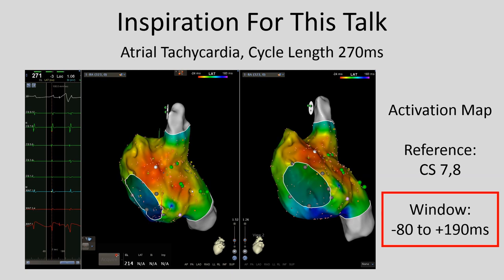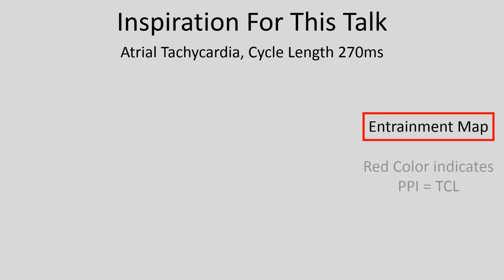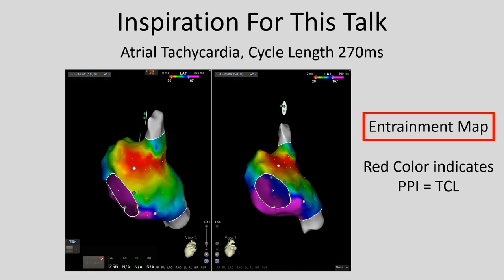At this point, we decided to abandon activation mapping because it was giving us information that didn't seem helpful. We went to entrainment mapping. When we created an entrainment map looking for spots in or immediately adjacent to the tachycardia circuit, we found a clear region where the post-pacing interval was identical to the tachycardia cycle length. When we placed ablation lesions at this location, the tachycardia terminated. So we went back to the various activation maps to figure out what could have gone wrong — why did the activation maps not lead us to this location the way entrainment mapping did?